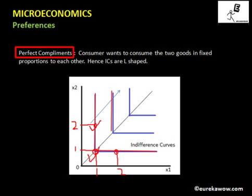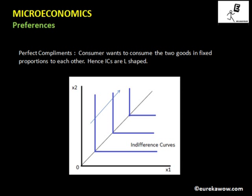As you move above on the diagram, the utility level increases because the consumer is able to consume more, and since more is preferred to less, it gives the consumer a higher level of satisfaction. This is indicated by the arrow — as you move above, the utility level or satisfaction level of the consumer increases.